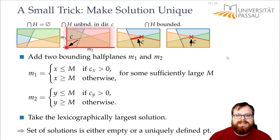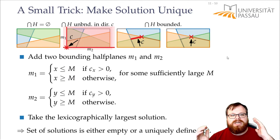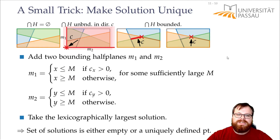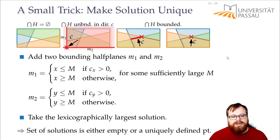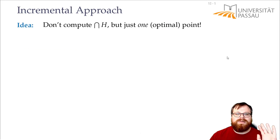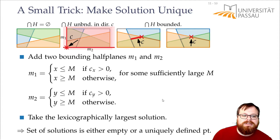So how does that help us now? Earlier, when we talked about how to intersect half planes, the first thing we considered was the incremental approach: take one half plane, put in the next one, intersect, put the next one in, intersect, and so on. But we quickly realized it's too slow. Now I want to go back to this approach, but the big change is we don't compute the whole intersection — only the optimal point, or one optimal point — the one according to these adjustments.